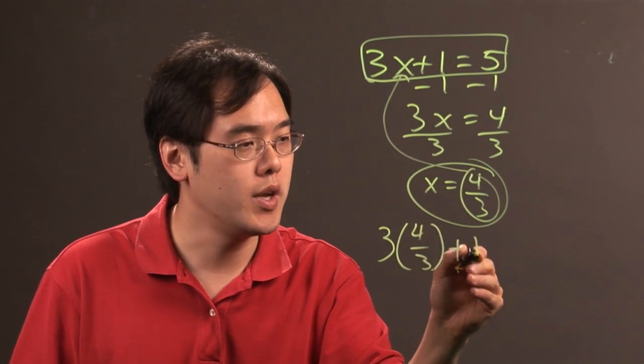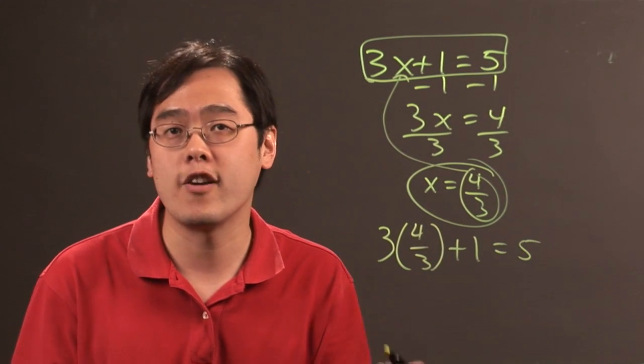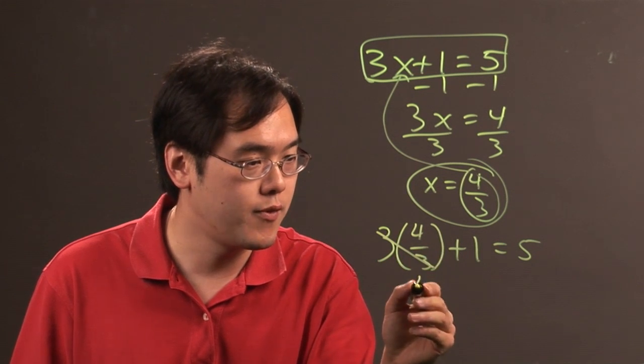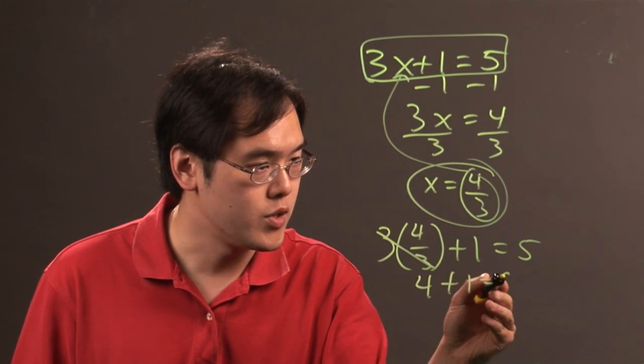3 times 4 thirds plus 1 equals 5, and see if what you have makes sense. The 3's here cancel, so you're left with 4 plus 1, which equals 5.